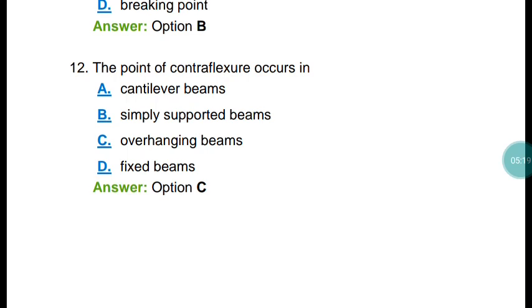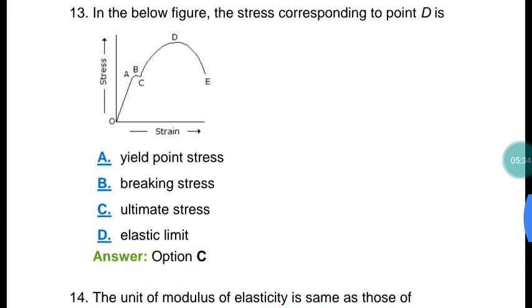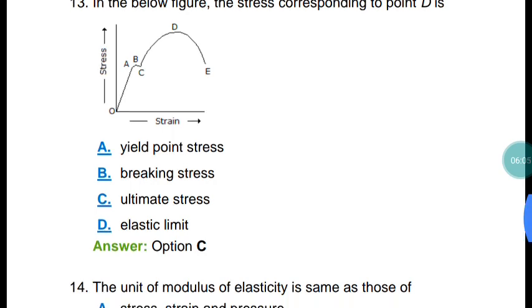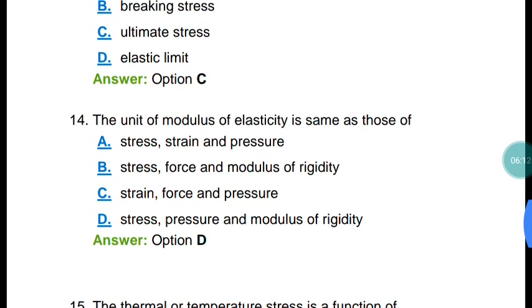Question number twelve: The point of contraflexure occurs in overhanging beams. Question number thirteen: Referring to the stress-strain diagram, point D corresponds to ultimate stress. Point A is the limit of proportionality, point B is the upper yield point, point C is the lower yield point, point D is the ultimate stress, and point E is the fracture point.